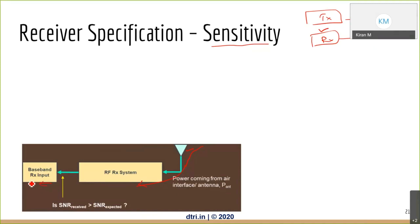Where is the signal coming from? On the TX side you had some signal, sent it over the air channel. If it's a mobile phone, it goes to the tower, for example, and then comes back to the receiver. These are two-way communications.